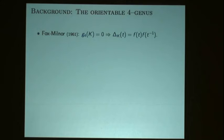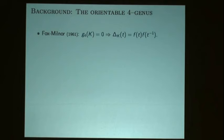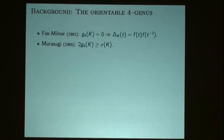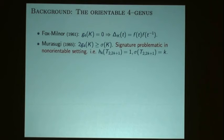Let me give a little background on the orientable four-genus. The first obstruction concerning the four-genus was around 1961. Fox and Milnor proved that if a knot has four-genus zero, then its Alexander polynomial vanishes. This polynomial condition, for many reasons, doesn't extend to any higher genus problem.